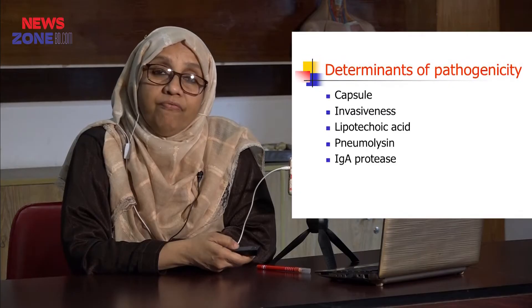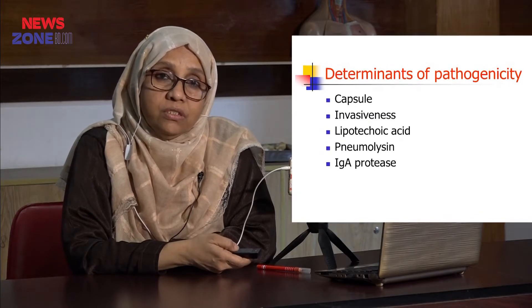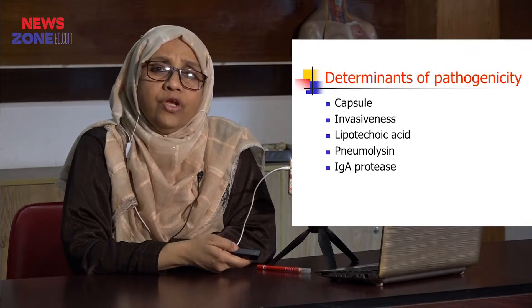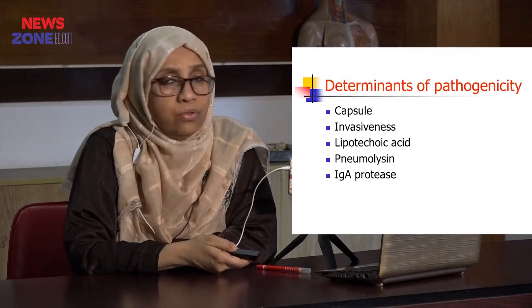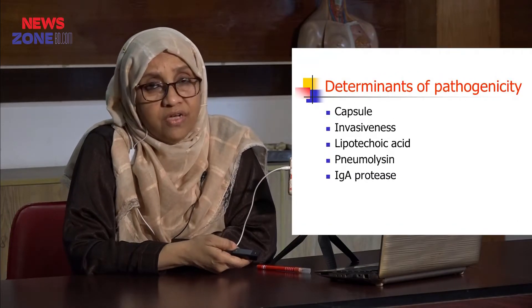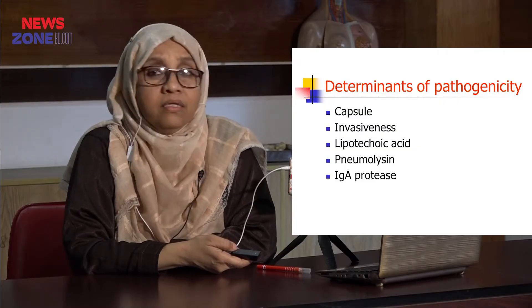The other determinants of pathogenicity of Streptococcus pneumoniae include: the capsular polysaccharide, which gives it invasiveness; lipoteichoic acid; pneumolysin; and they are also immunoglobulin A protease producers, meaning they can evade the immune system at secretory surfaces.